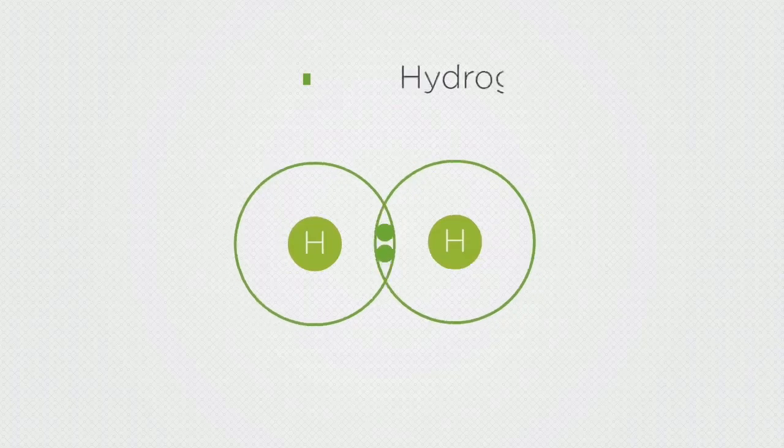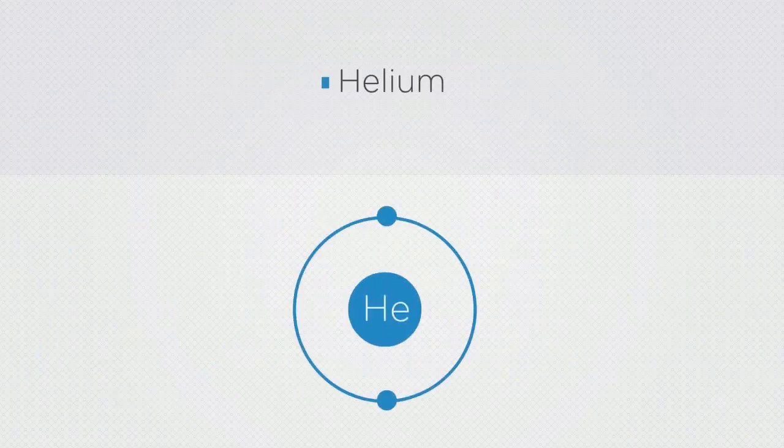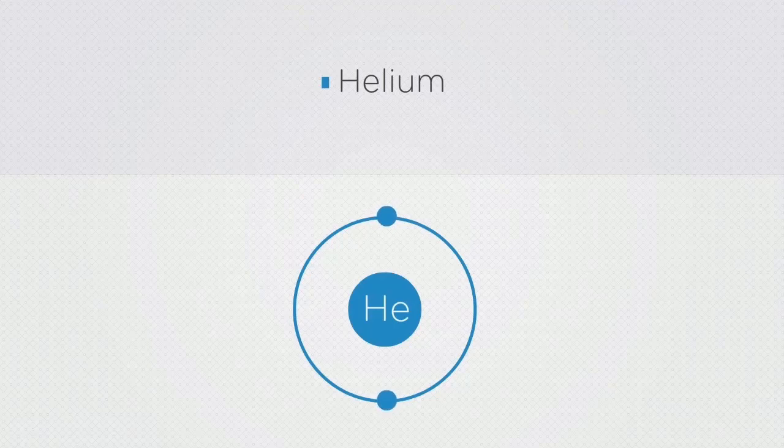These are represented by a dot and cross. Which noble gas does this correspond with? The answer is helium, which has two electrons in its outer shell.